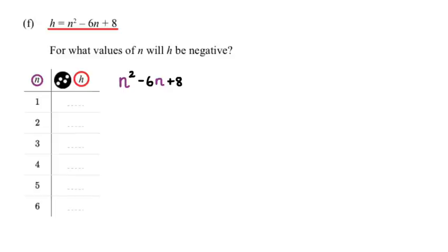In the first line if n equals 1, then I need to figure out what h is when n equals 1. So that means I'm going to go 1 squared minus 6 times 1 plus 8, and if I do 1 squared minus 6 plus 8, I actually get 3.